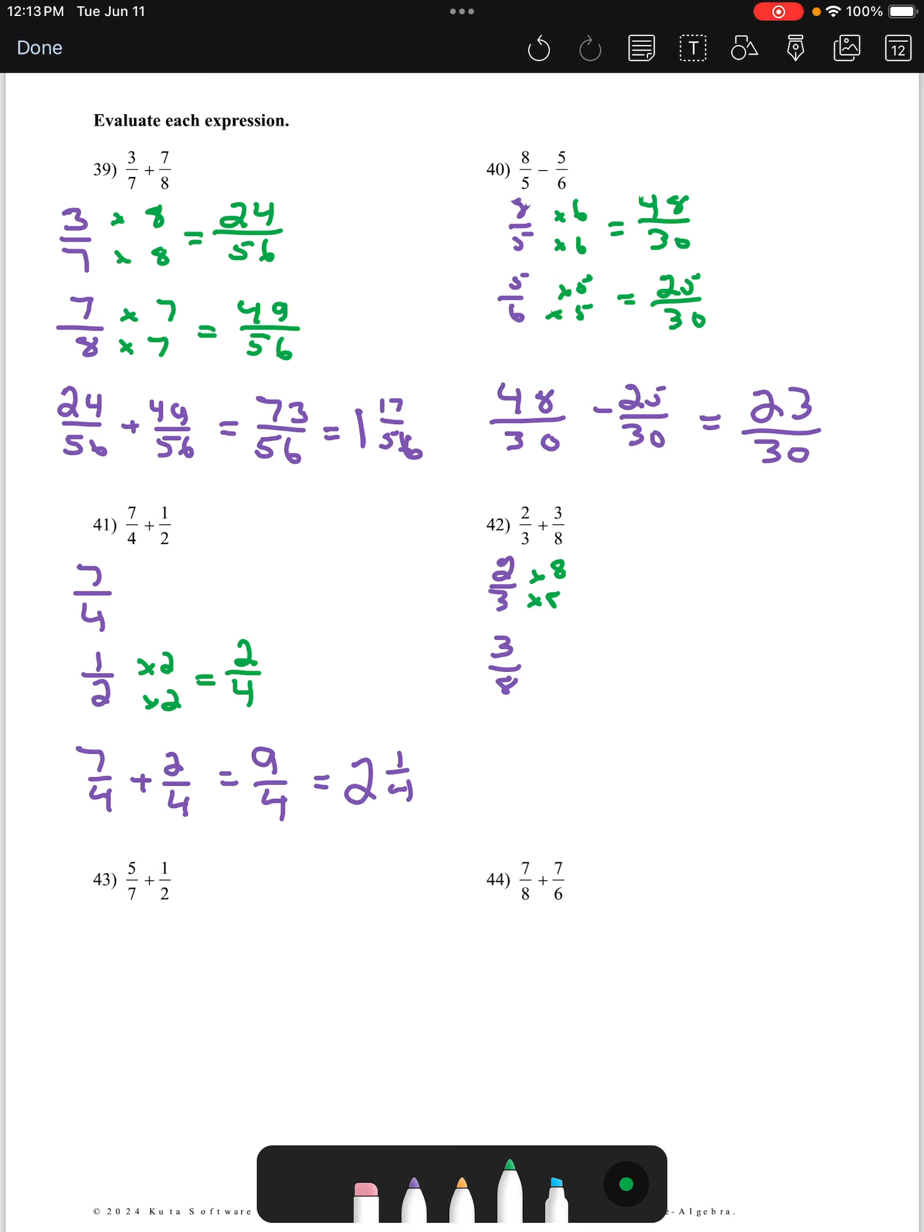For number 42, we have 2/3 and we have 3/8. The smallest denominator that 3 and 8 can agree to become is 24. So our first fraction needs multiplied by 8s to become 16/24. Our second fraction needs multiplied by 3 to become 9/24. So now we're doing 16/24 plus 9/24. That's 25/24. Slightly improper. We can take 1 24 away from 25. When we do that, 1 is left behind.